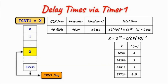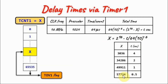Timer 1 in normal mode can be programmed to give us different delay times by choosing different initial count values X. The total time is given by an equation, and the unknown X is given by another equation. For example, if we want a 0.5 second delay, the value of X is calculated, and when we copy this value into the counter register the delay will be 0.5 seconds.